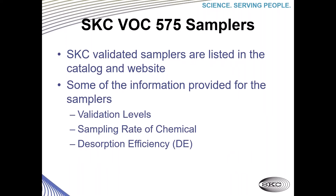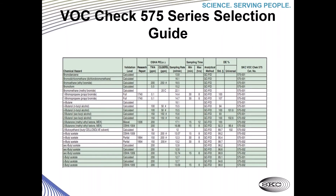A bit about the 575 samplers. They're listed in the catalog and on the website. Information provided for the samplers includes validation levels, sampling rate, and desorption efficiency. Here is a table from our catalog regarding the 575 series samplers, showing validation levels, sampling rate, and desorption efficiency.